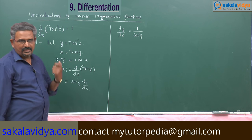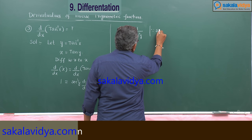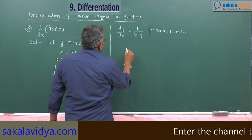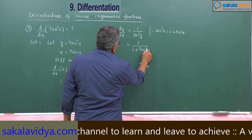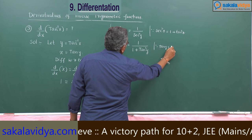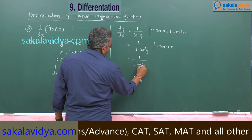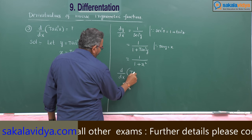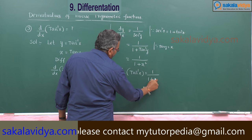Here we have to write secant square y in terms of x. From trigonometry we know that secant square theta is equal to 1 plus tan square theta. So this can be written as 1 by 1 plus tan square y. Since tan y is equal to x, we can write 1 by 1 plus x square. Therefore, d/dx of tan inverse x equals 1 by 1 plus x square.